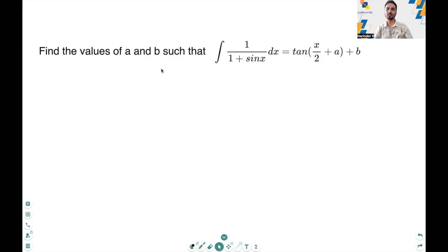Hi, today we are solving a very interesting integral question which is: find the values of a and b such that the integral of 1 over 1 plus sine x dx equals tan of x over 2 plus a plus b.